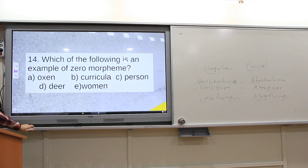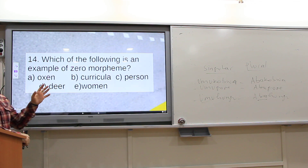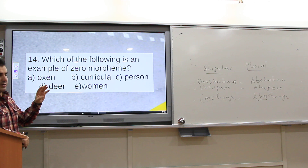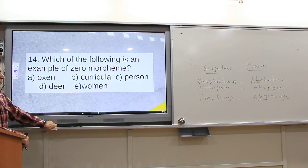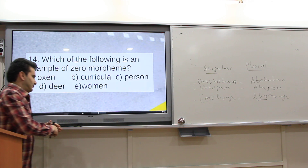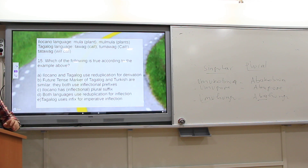Which of the following is an example of a zero morpheme — deer or buffalo? Deer: one deer, two deer. The others are not zero morphemes because their singular and plural forms differ — for example, man/men, ox/oxen, curriculum/curricula, person/people, woman/women.